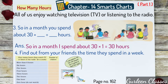Find out from your friends the time they spend in a week. Bert said he can watch TV for 24 hours — is it good or bad? Watching television for 24 hours is bad as it affects our eyes. Do not watch television for the whole day; one or two hours is enough. Now find out from your friends and fill the table with how many hours they watch TV or listen to the radio in a week and the number of children.